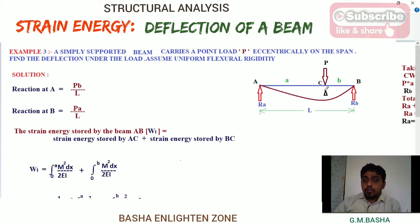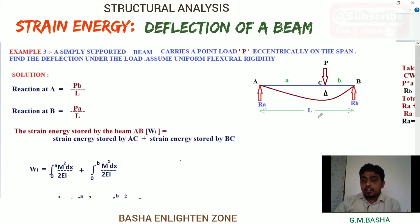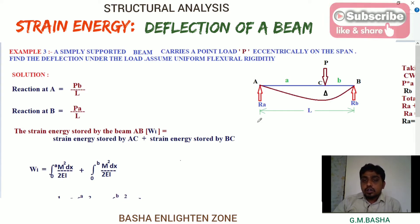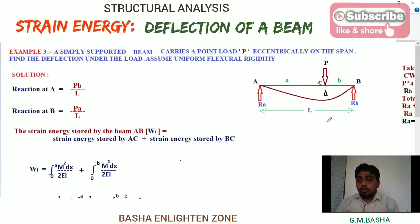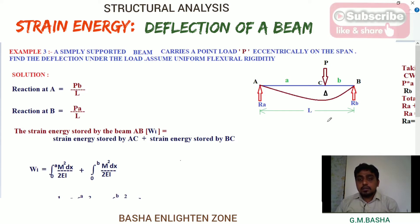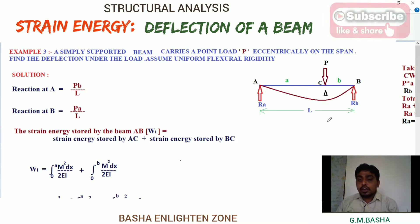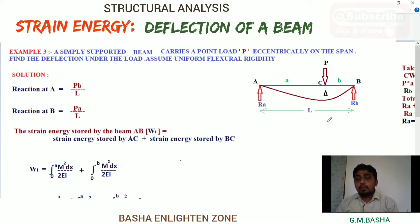We are finding the deflection delta exactly under the load. Our first step is to find the reactions at the supports. There are shortcuts for a simply supported beam: if a point load is acting exactly at the center, the load is distributed equally, meaning reaction at A and reaction at B will each equal W/2.